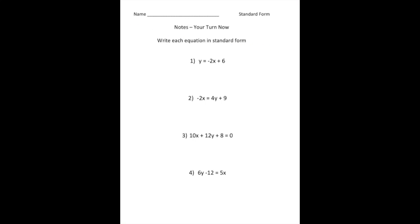For these problems you had to write each equation in standard form — that means ax plus by equals c format. So the first equation: we have y equals negative two x plus six. This is written in slope intercept form. To convert it into standard form, I'm going to add 2x to both sides. So now we have 2x plus y equals six, and there's the first one.